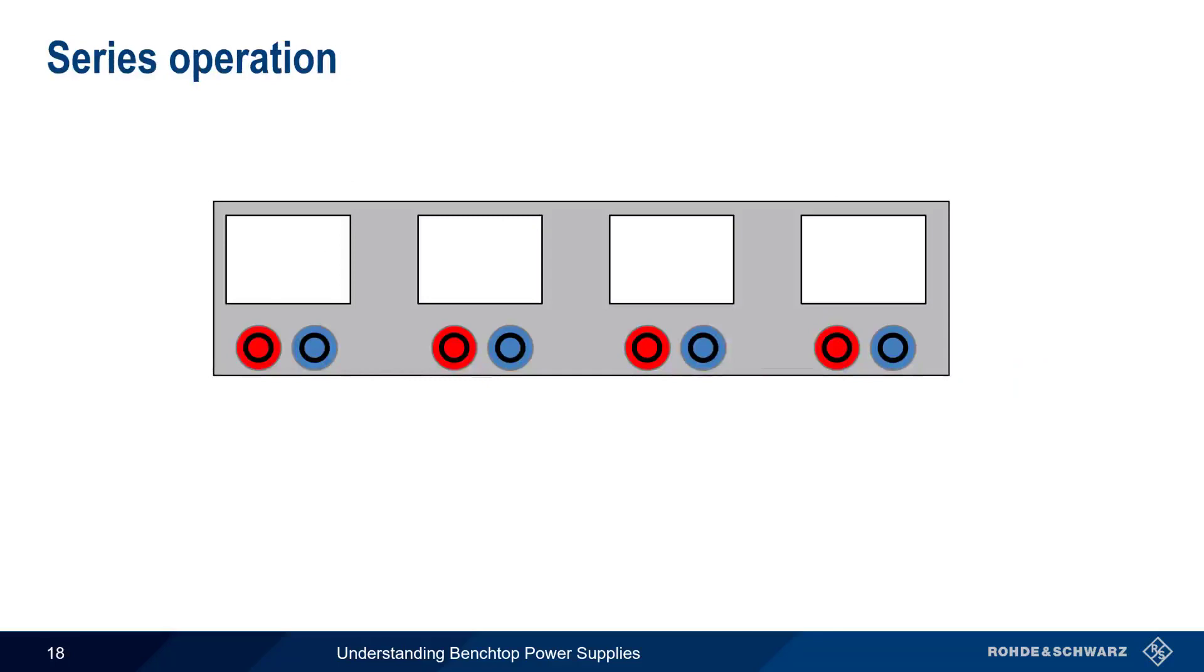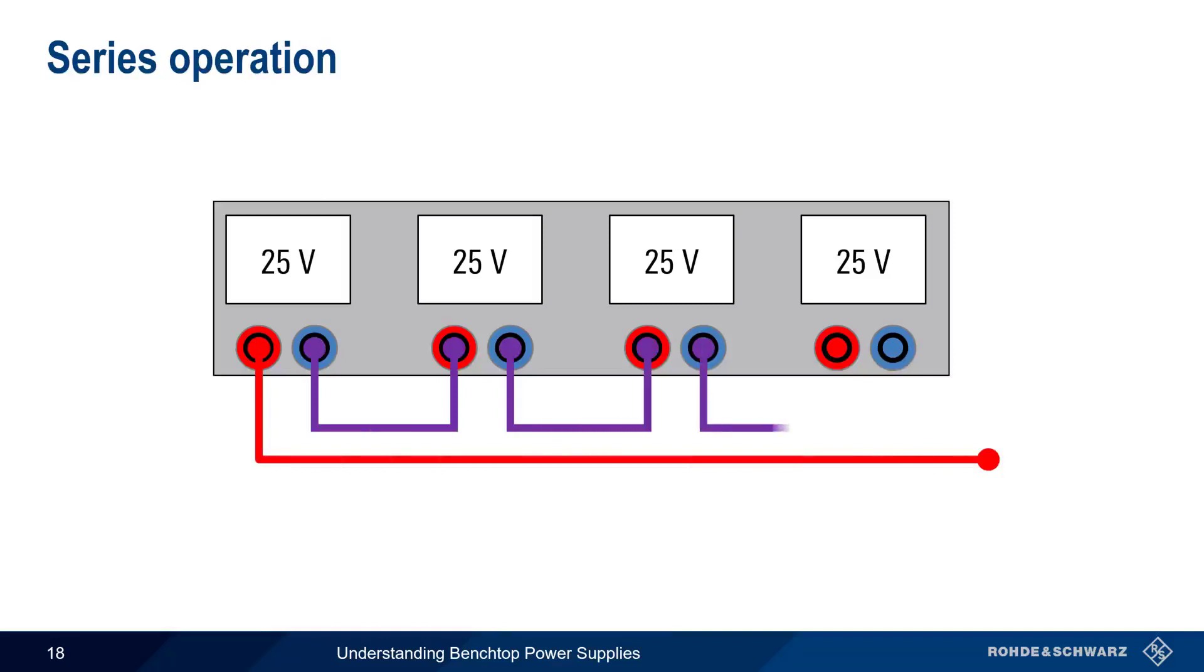Let's look at an example of series operation, which combines channels in order to produce higher voltages. We'll start by configuring each of our four channels to output 25 volts, and then connect them in series. The result is a combined output voltage of 100 volts. Note that the channels don't all have to be the same voltage. We could also use this combination of different voltage settings to obtain the same 100 volts combined output.